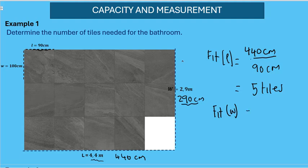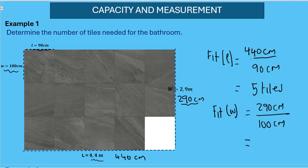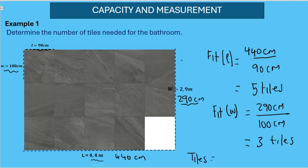We take the width of the bathroom, 290 centimeters, and divide it by the width of each tile, which is 100 centimeters. This gives us 2.9, but we round up to three tiles — as we said, with capacity we always round up. So the total number of tiles is five tiles in length multiplied by three tiles in width, giving a total of 15 tiles.